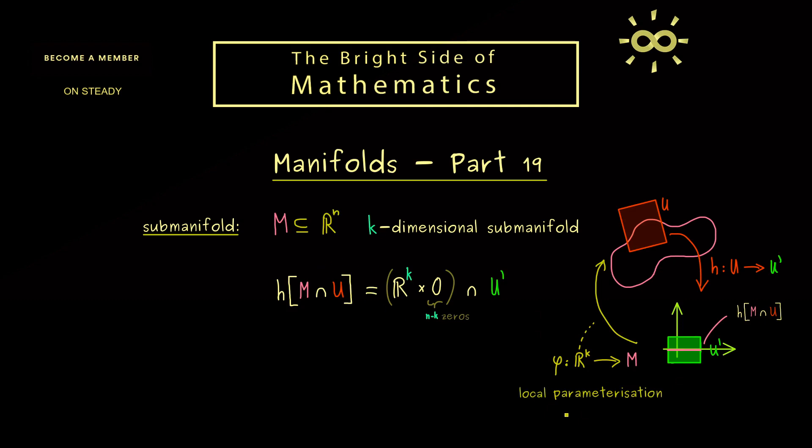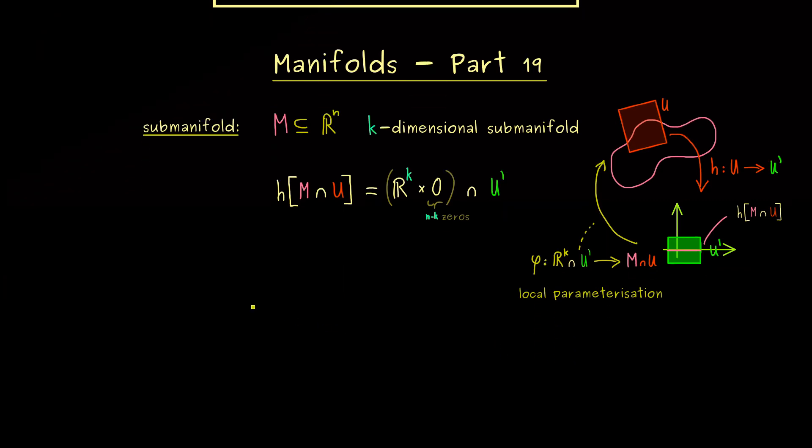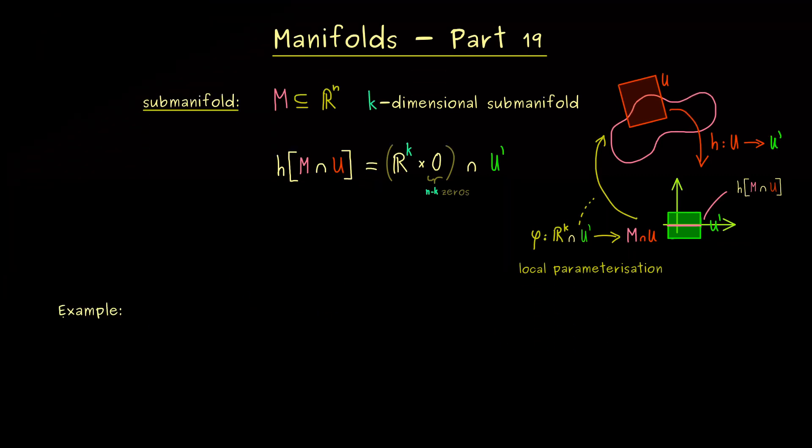More precisely, it's a local parameterization because it only describes a part of the whole manifold. This means we should also put this information into the codomain and the domain. Of course, these are just details. The crucial thing is now that we start with a k-dimensional space on the left and land in the n-dimensional space, but we describe the manifold inside it. So maybe, let's immediately look at a very simple example here. In fact, let's keep it simple and let's take a one-dimensional example again.